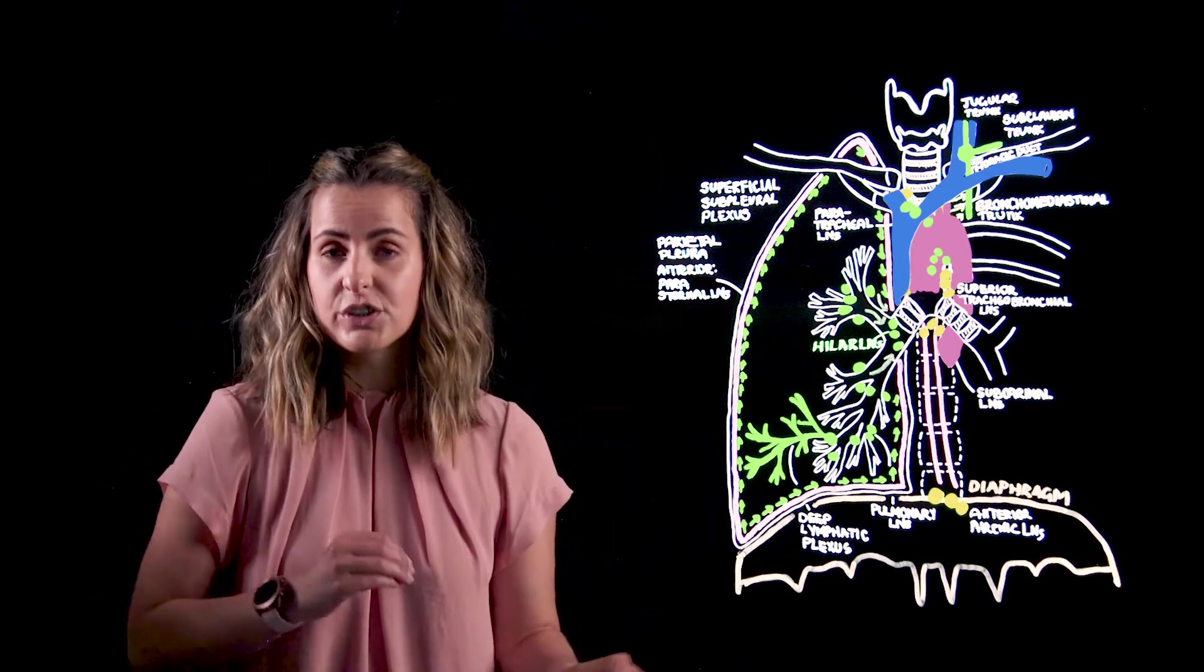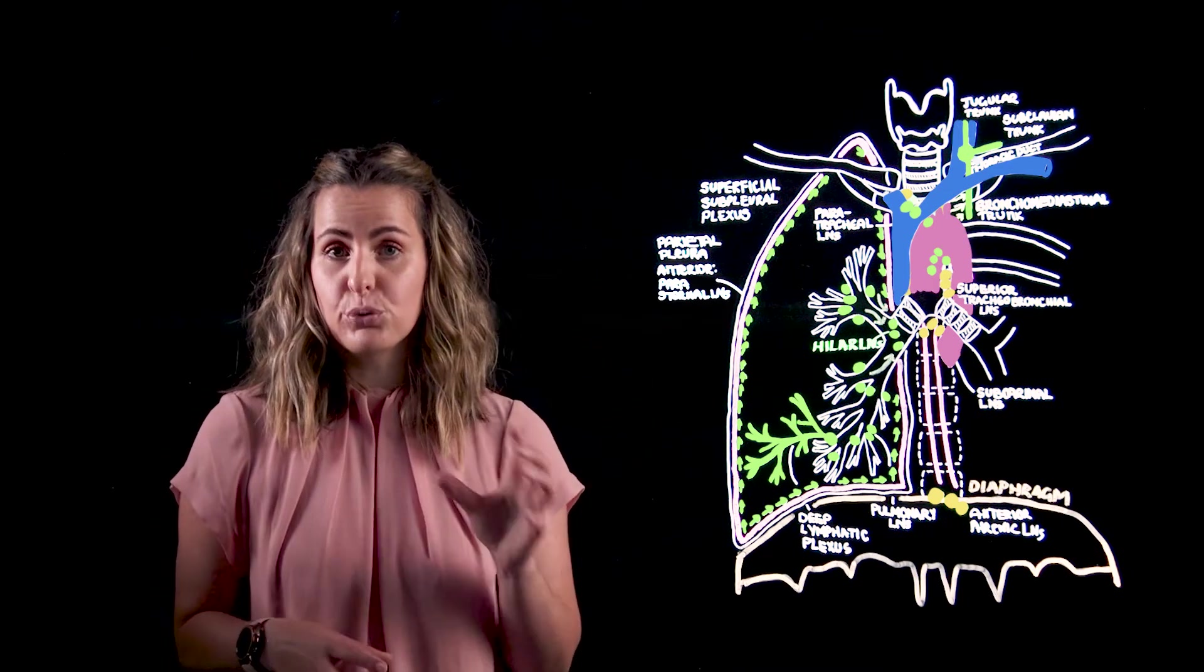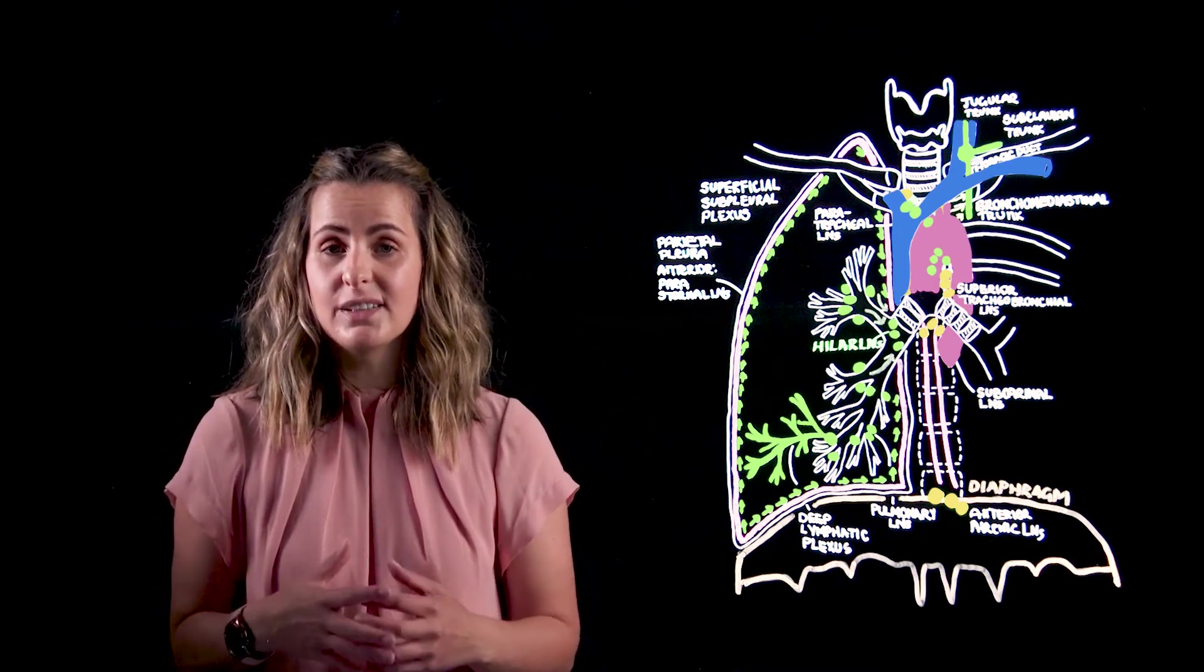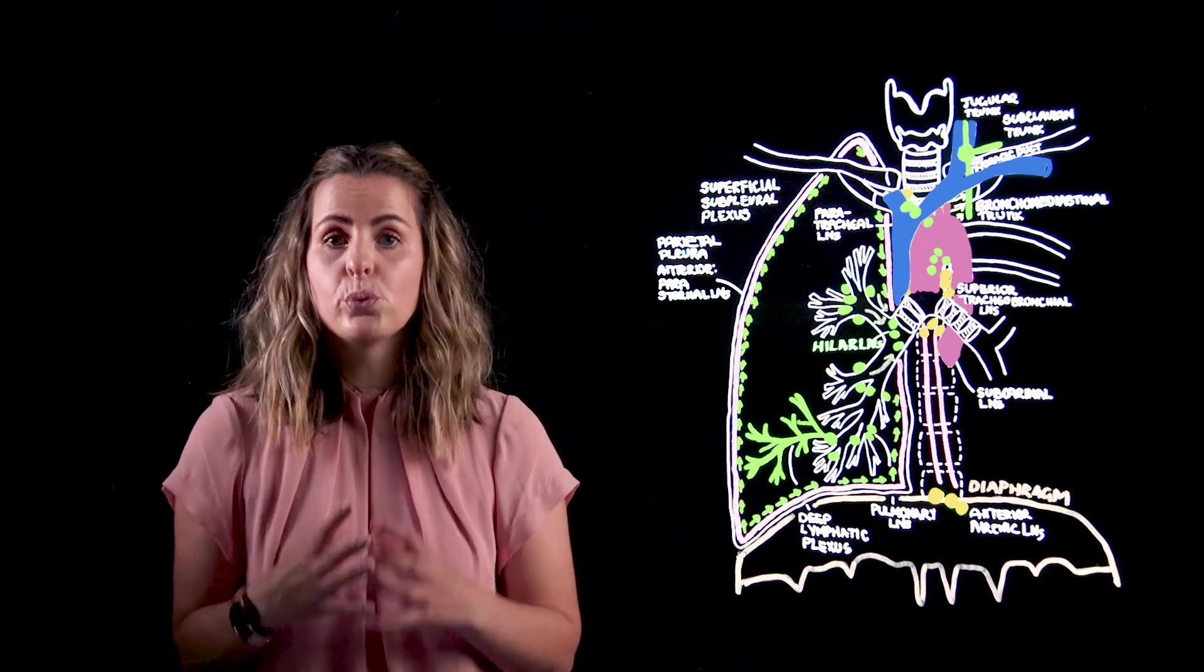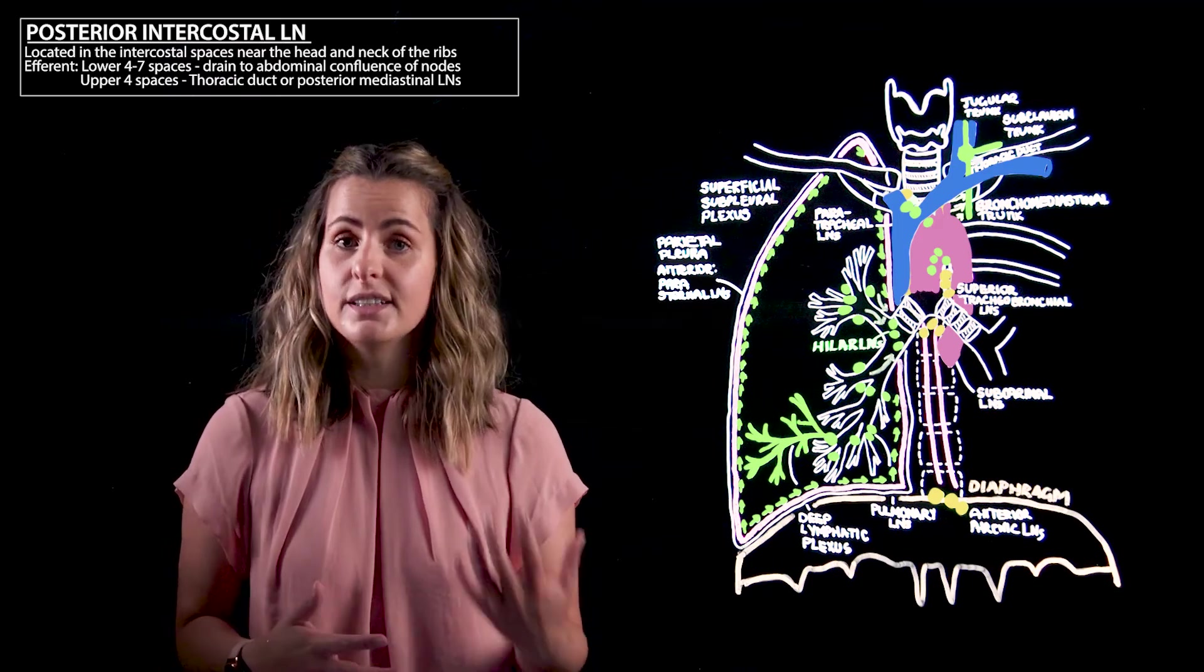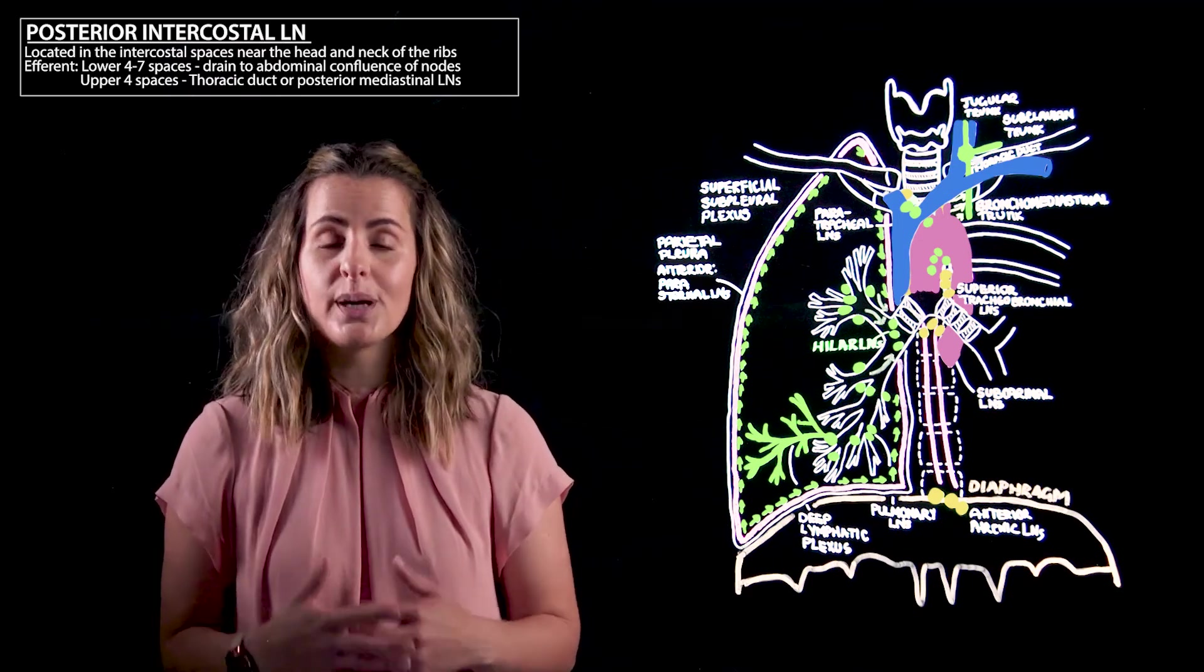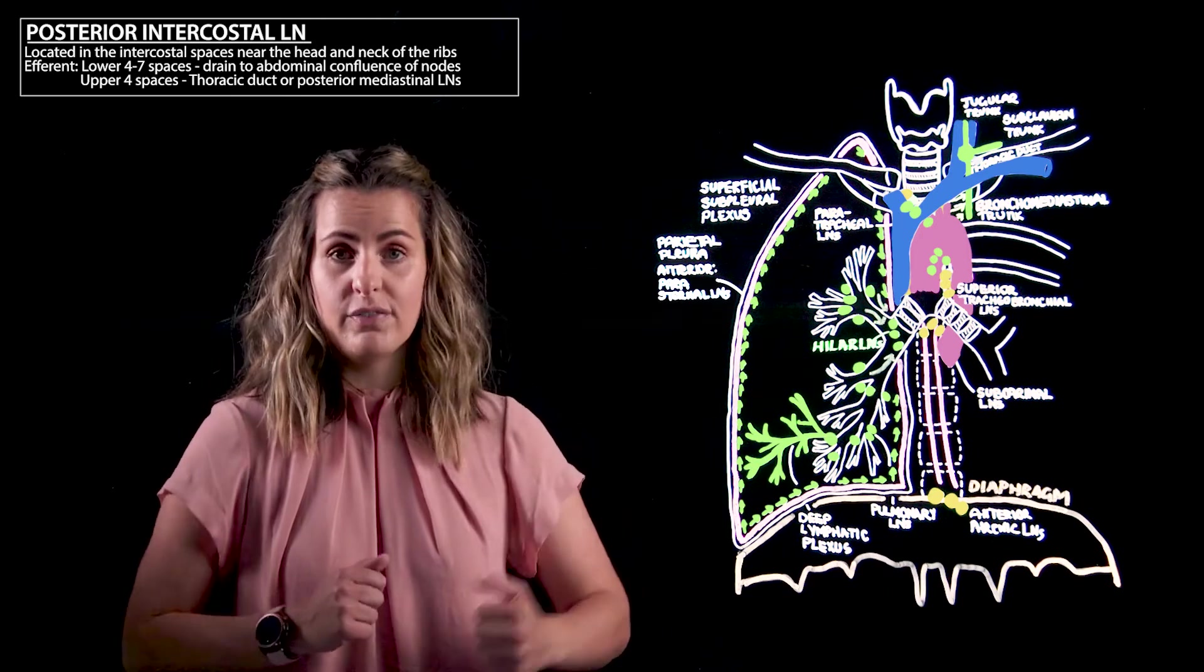If we then consider the same structures but their posterior aspects, the posterior aspects of the parietal pleura as well as the posterior chest wall will drain to the posterior intercostal lymph nodes. These are located in the intercostal spaces near the head and neck of the ribs.